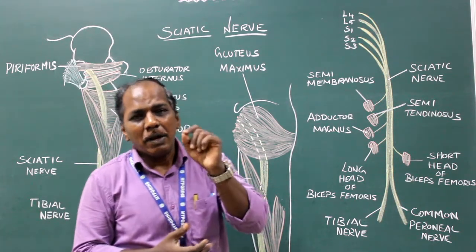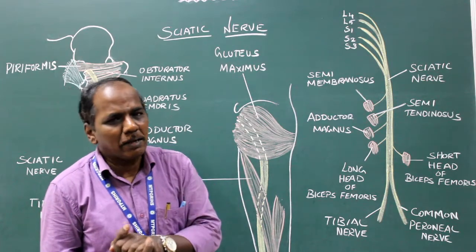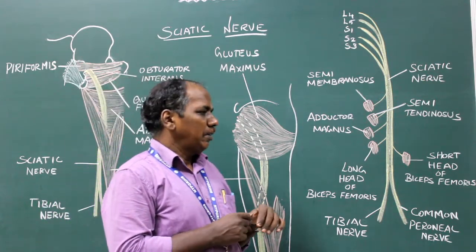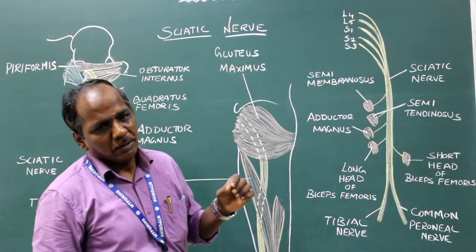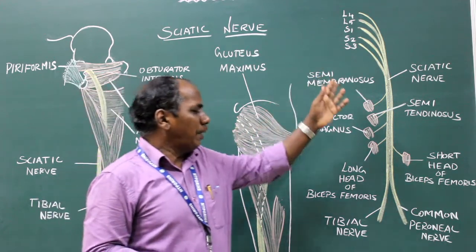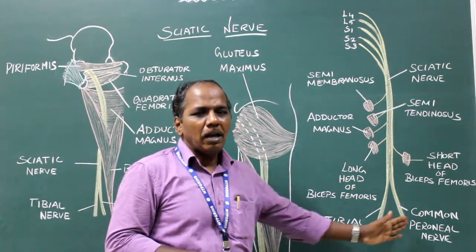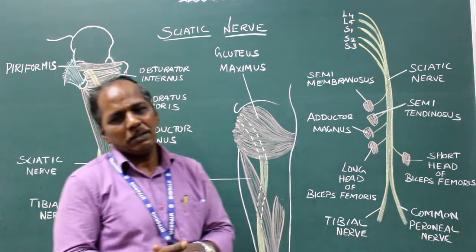It is one of the terminal branches of the sacral plexus. It has two components: the tibial component and the peroneal component.